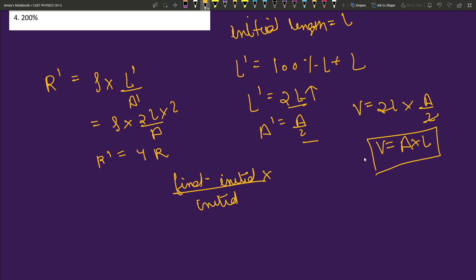Final what is 4R, initial R, then R into 100. Answer is 300%.